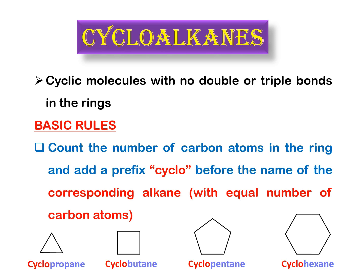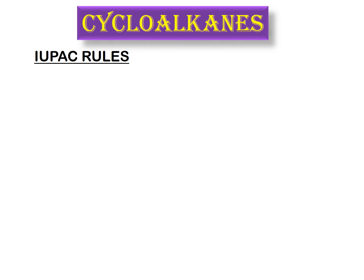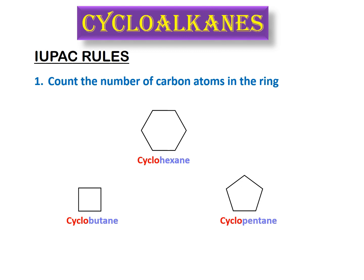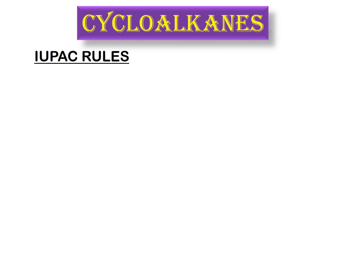Now let's discuss the IUPAC rules one by one. The first rule is to count the number of carbon atoms in the ring and then name the molecule using the prefix 'cyclo' before the corresponding alkane. For example, a six-carbon ring gives cyclohexane, a four-carbon ring gives cyclobutane, and a five-carbon ring gives cyclopentane.